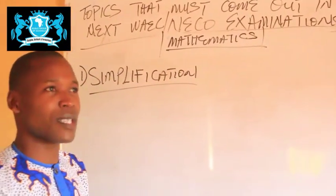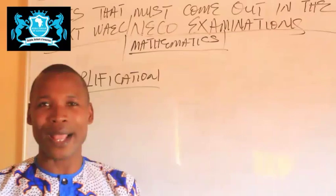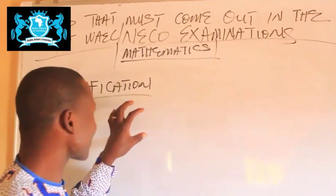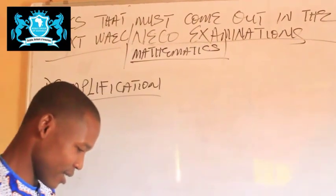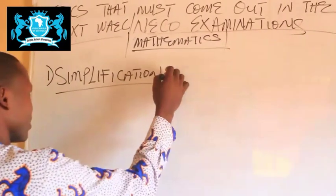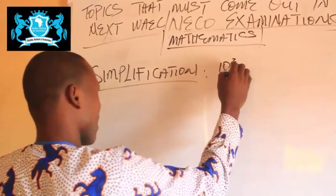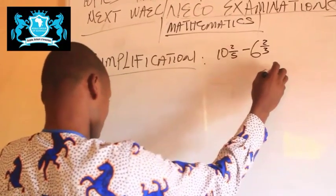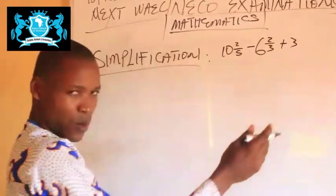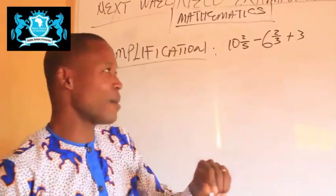This topic comes out both in the objective and in the theory aspect. If you are writing NECO, WAEC, or JAMB, you should master your Simplification. Simplification questions are always things like: 10 root 2 over 5 minus 6 root 2 over 3 plus 3. Questions like this will not be solved in depth here, but try to solve this and tell me the answer in the comment section — it's more like an assignment for you.